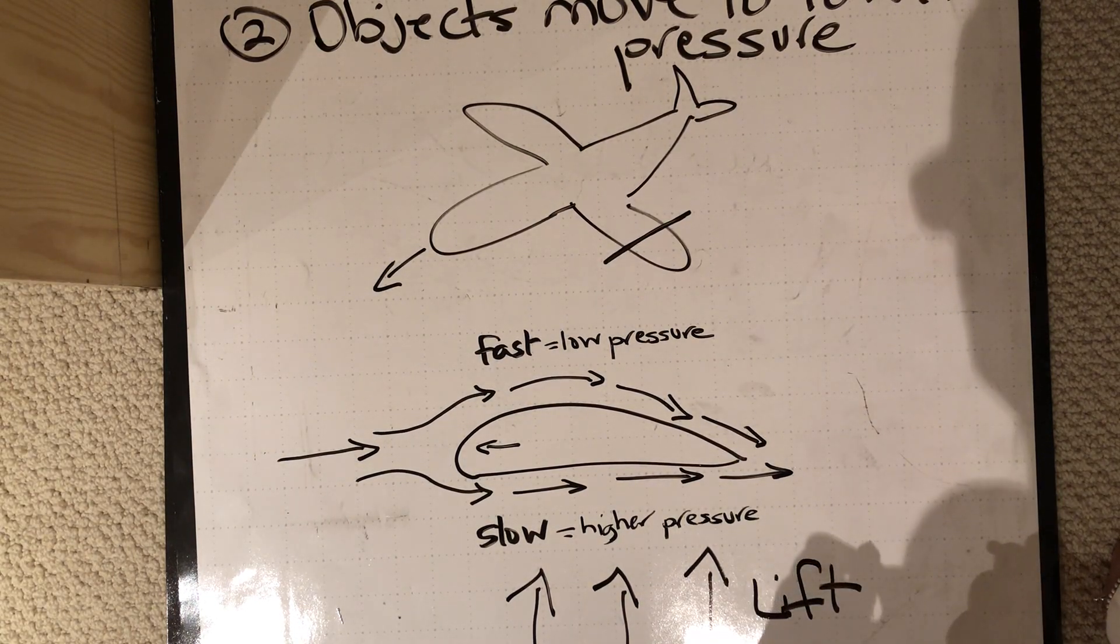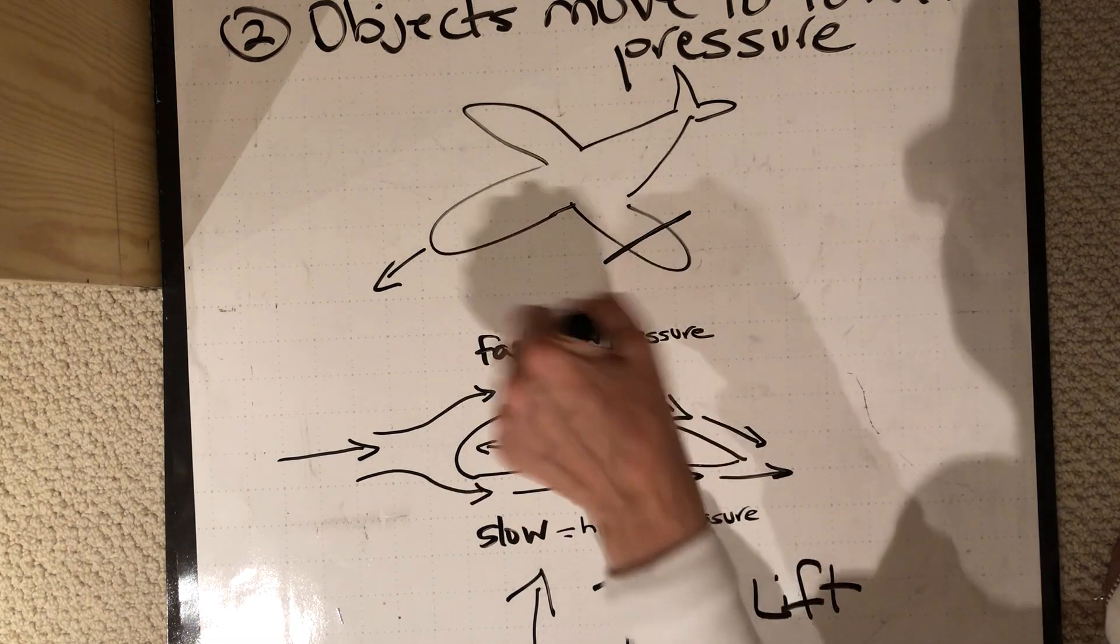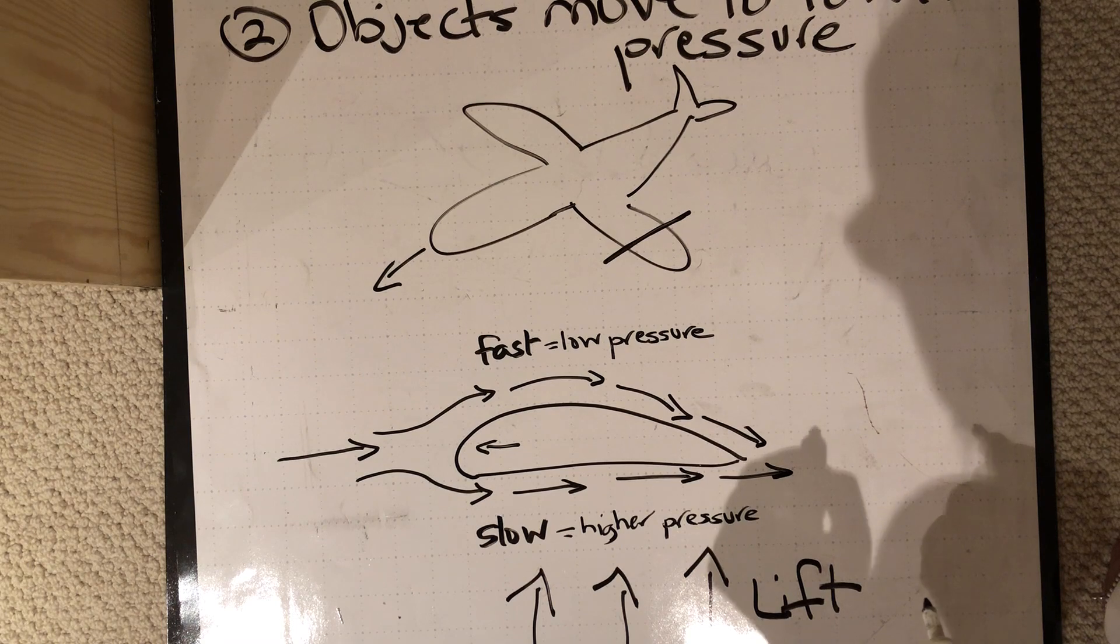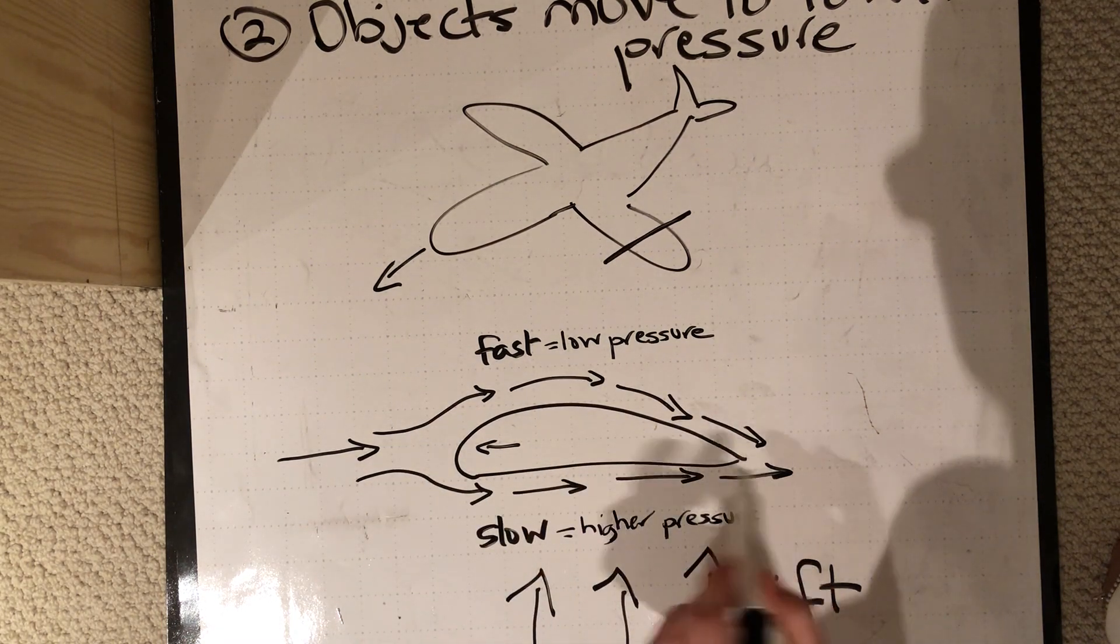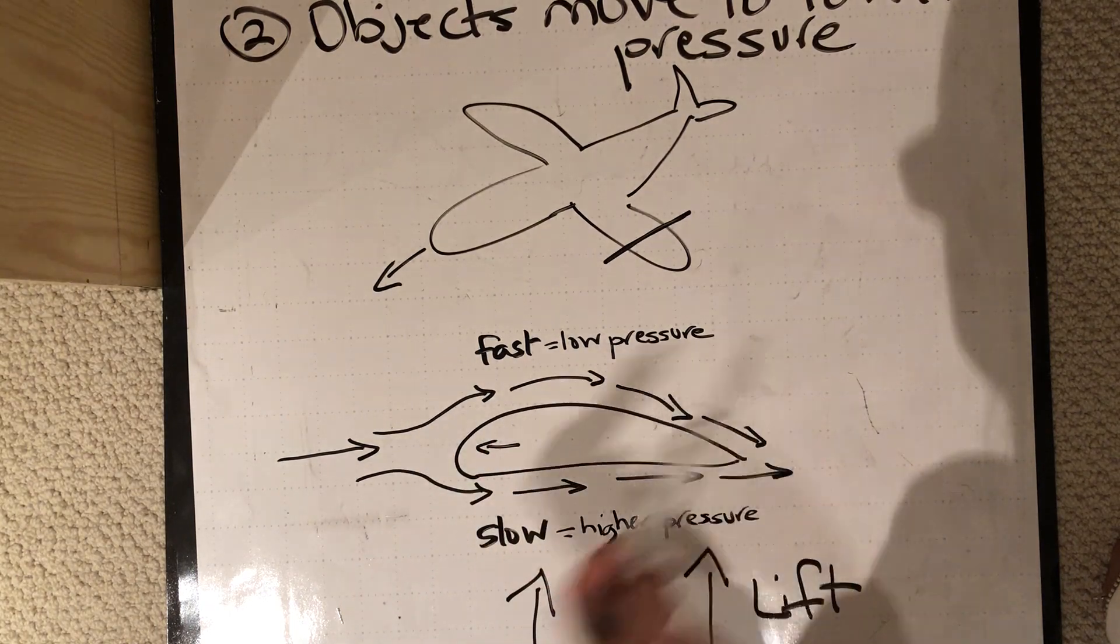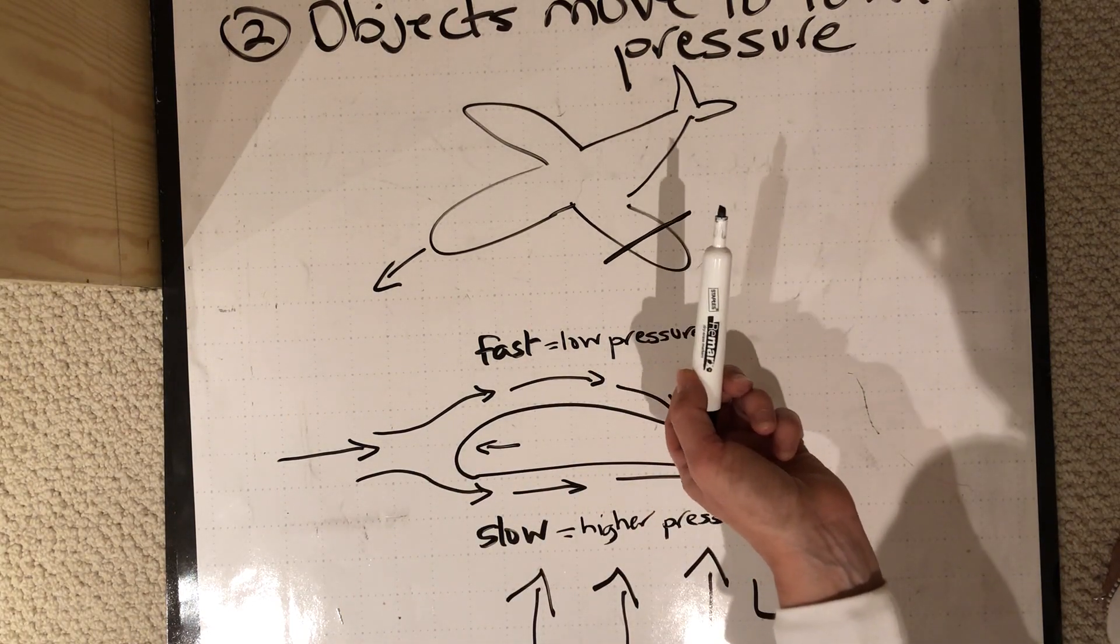So as the plane is moving, you actually have faster moving air on top, slower moving air on the bottom. The plane moves to where the lower pressure is, where the faster air is, it actually causes the plane to rise up.